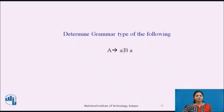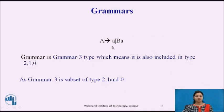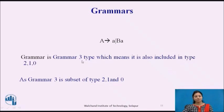Pause for a while and determine the grammar type of the following: A → A or BA. The solution is that the given grammar is Type 3, which means it is also included in Type 2, Type 1, and Type 0. As we have seen, Type 3 grammar is a subset of Type 2, Type 1, and Type 0.